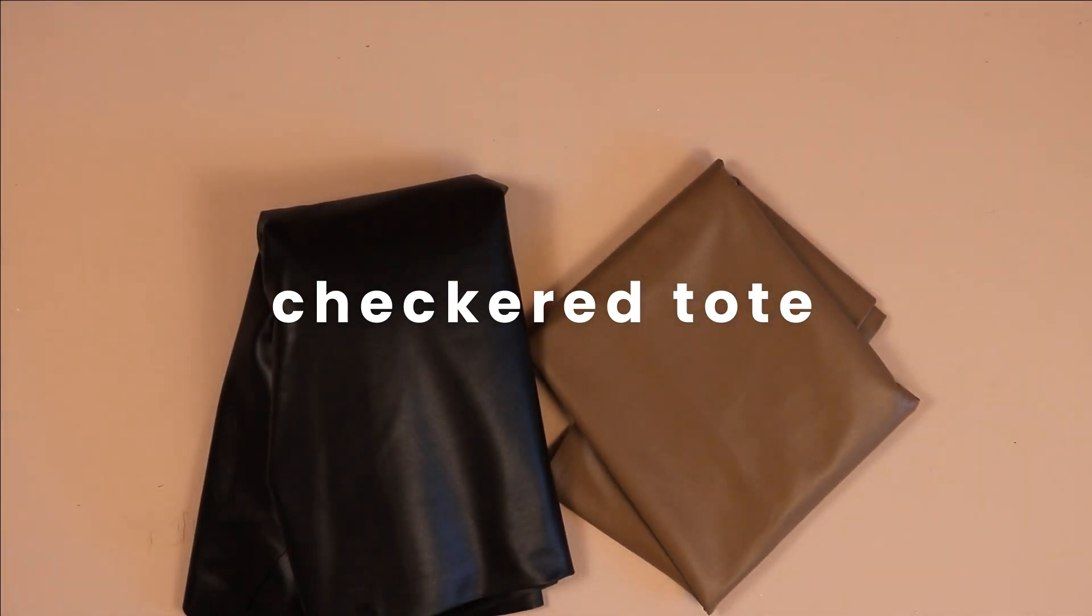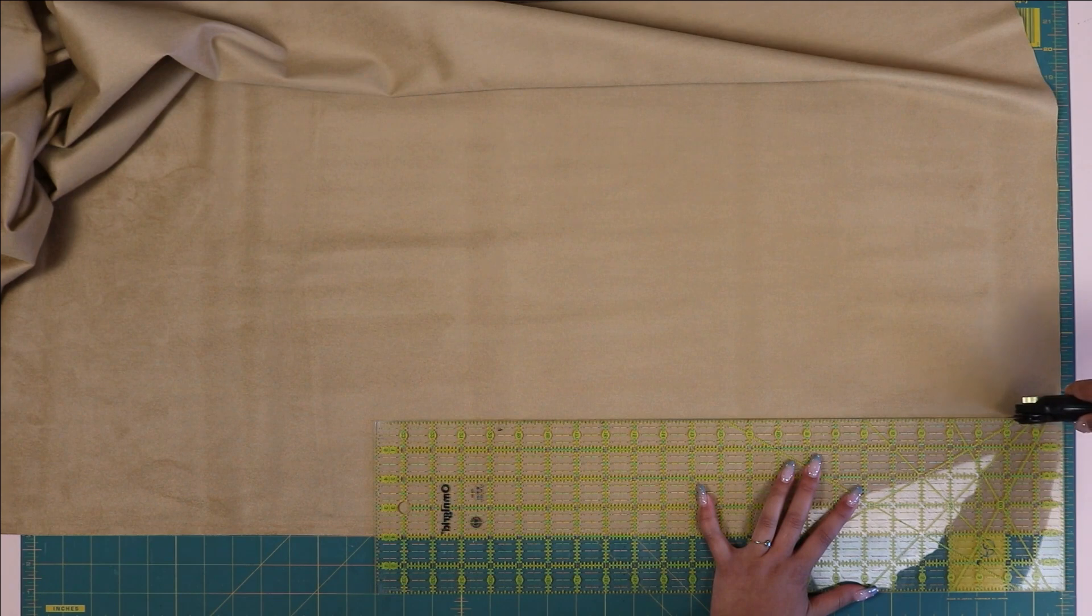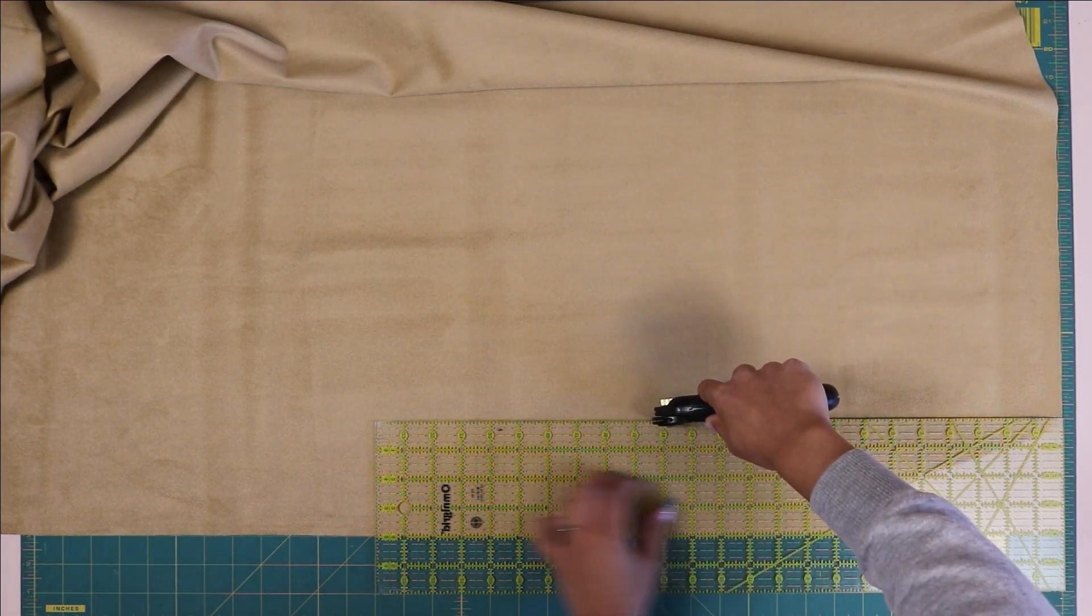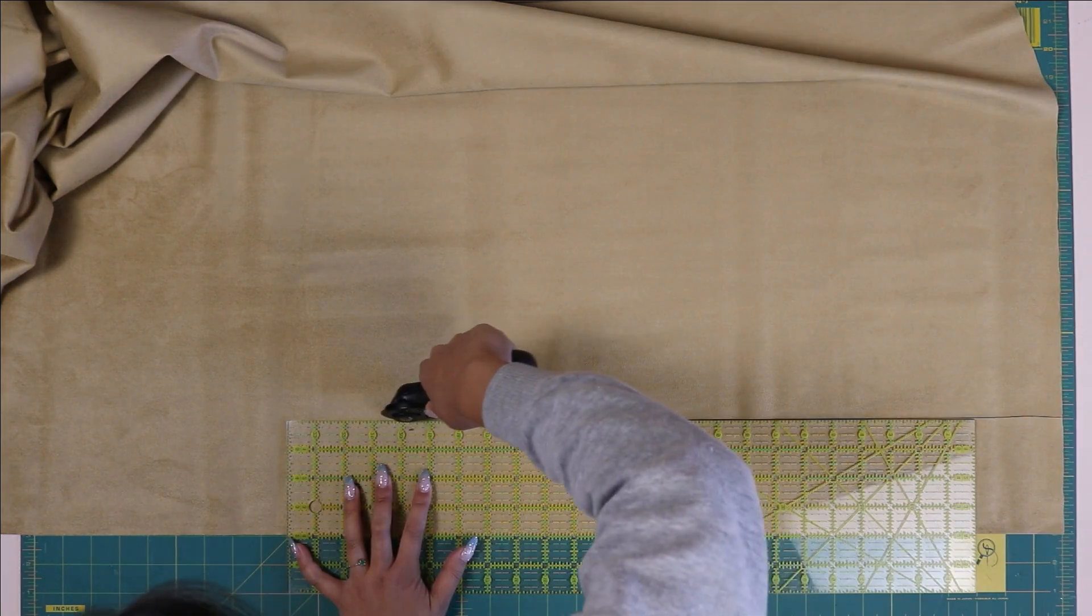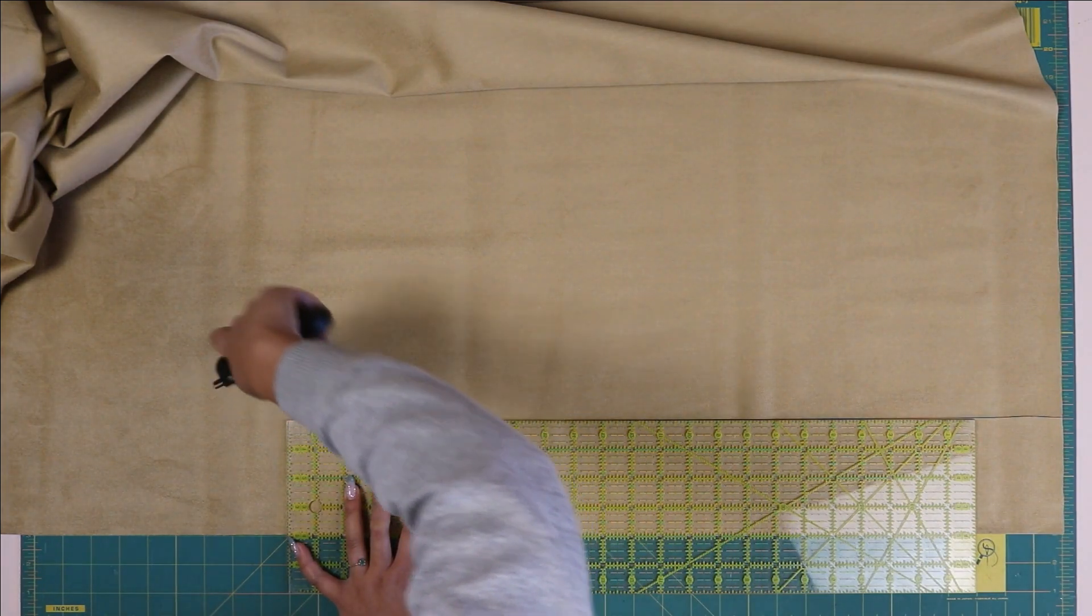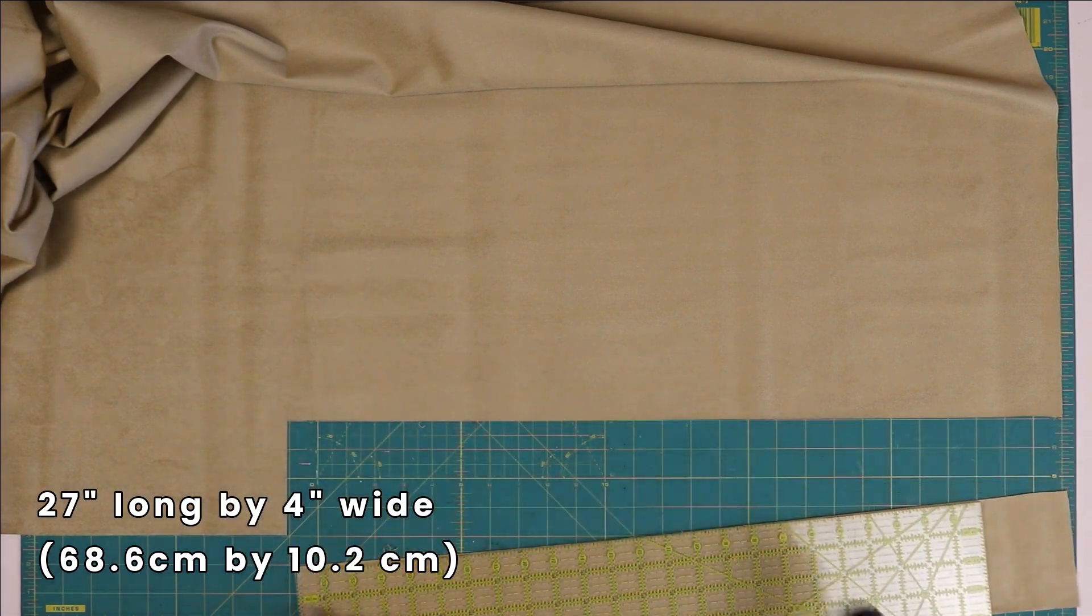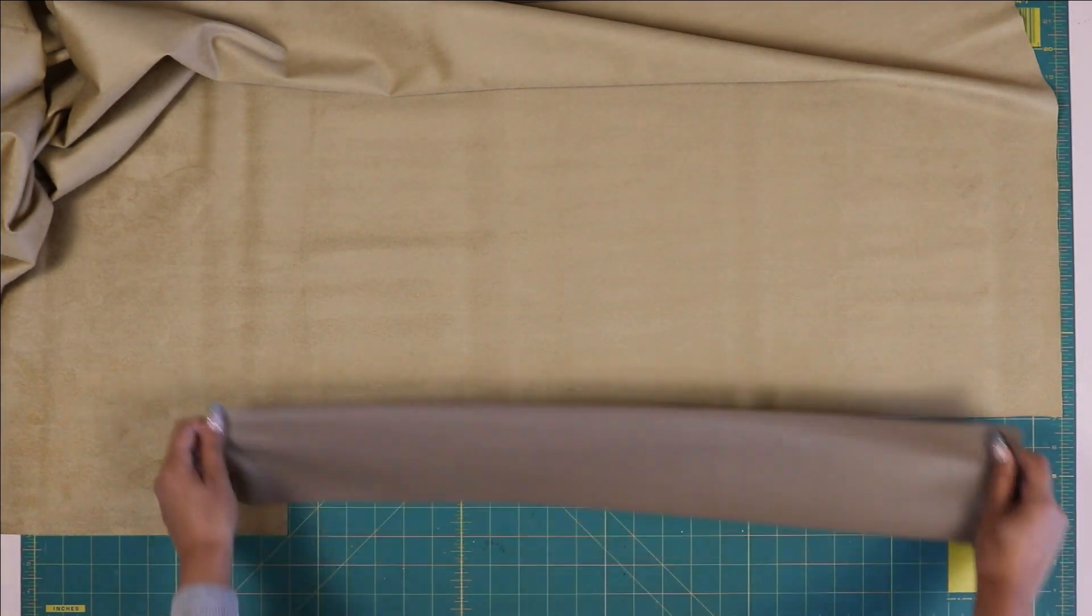Starting off with this checkered tote bag. First, you're going to want to grab two different colors of the same fabric. I'm choosing to use a faux leather, but this would also look really good if you wanted to use a canvas, which is much easier to work with. I'm first going to cut out the straps. The straps are going to measure 27 inches long by 4 inches wide. Since this is a checkered design, I'm going to cut out one strap in each color.